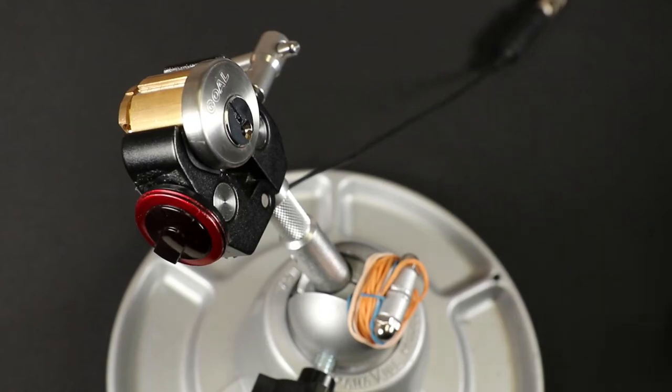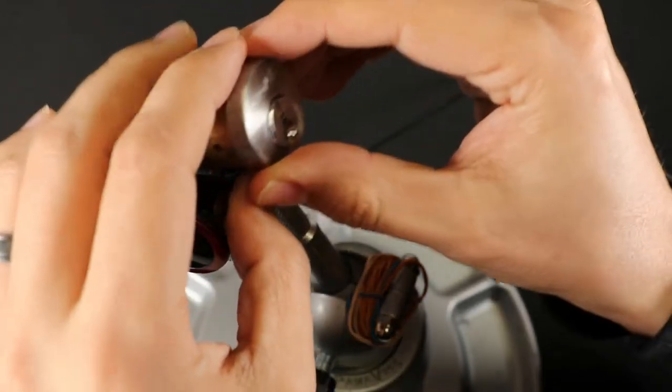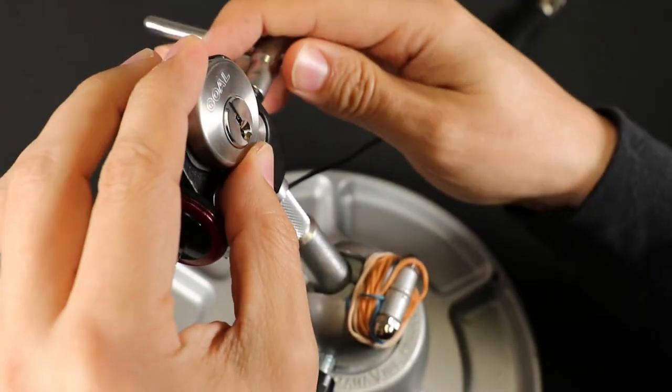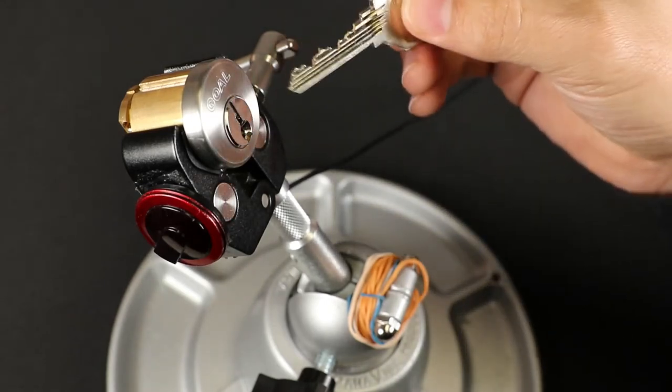Okay, here I have the Goal Z. It's got a nice little Z on the back of the cylinder. I've also seen it called the Z-Line. Goal Z. It's got seven pins in it.